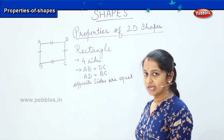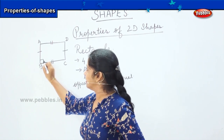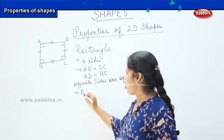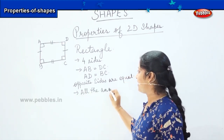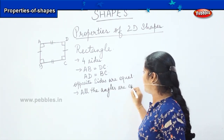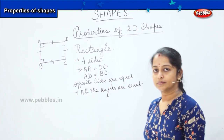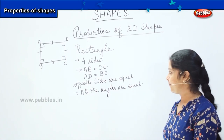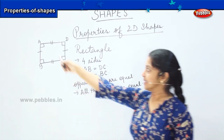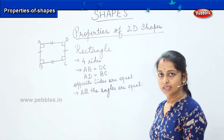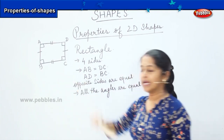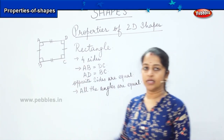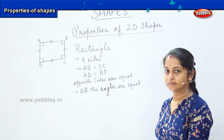What is the next feature of a rectangle? Can you count the angles? One, two, three, and four. So we can also say that all the angles are equal. So what did we see? The features of a rectangle: it has four sides, the opposite sides are equal — AB equals DC and AD equals BC — and all the angles are equal in a rectangle. Is it clear, children?